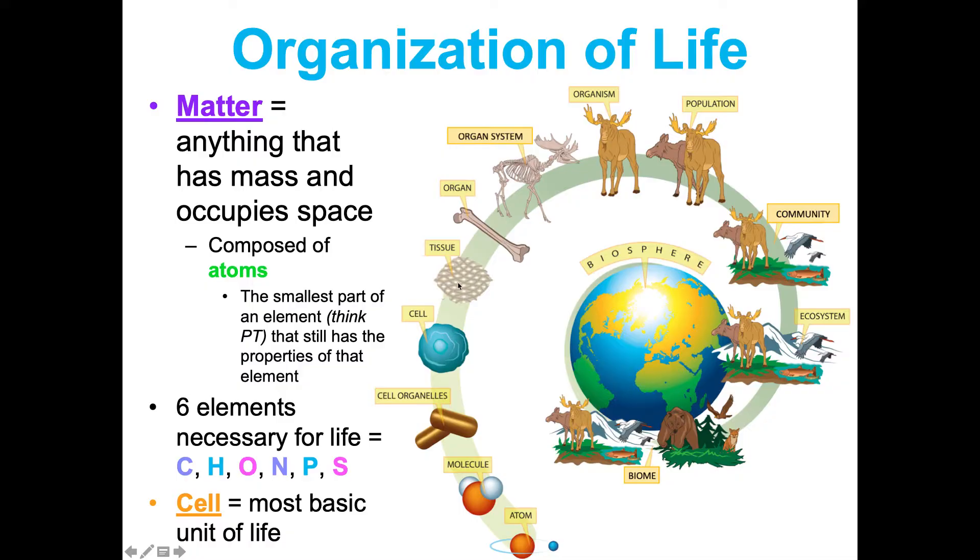Cells organize themselves into tissues that work together for a common function. Tissues organize themselves into organs. Organs into organ systems. And organ systems make up an organism. Organisms that live together of the same species in the same place are a population. All of the living things in a given place are a community. All the living and non-living factors in a given space are an ecosystem. Similar ecosystems around the world are called biomes. And then they make up our whole earth, which is the biosphere.